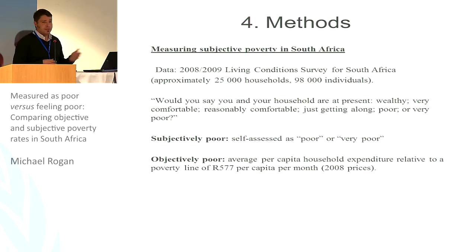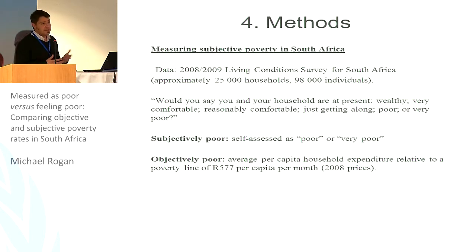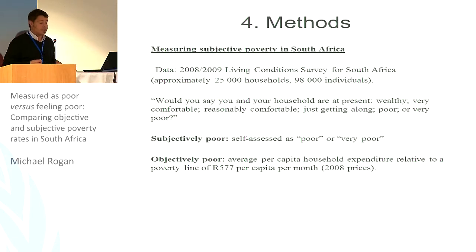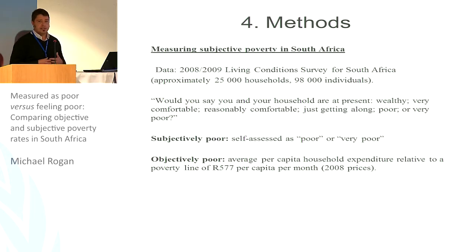In terms of objective poverty, we use the national poverty line of 577 rand per month per person — very roughly, if you divide this by 10, that gives you a loose concept of what it is in dollars. The data are in 2008 prices. Our goal here is to offer descriptive analysis of the ways that objective and subjective poverty measures differ by characteristics, and then we conclude with an econometric analysis where, holding expenditure constant, we try to identify what other characteristics predict a household's assessment of their subjective poverty status.